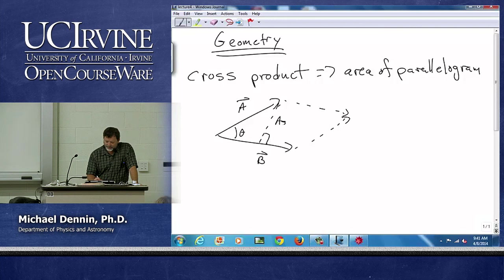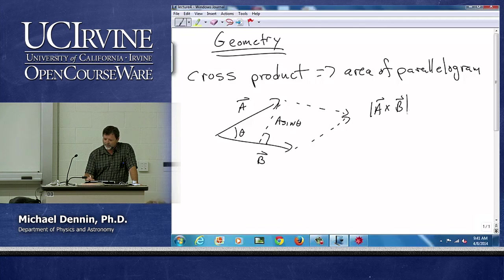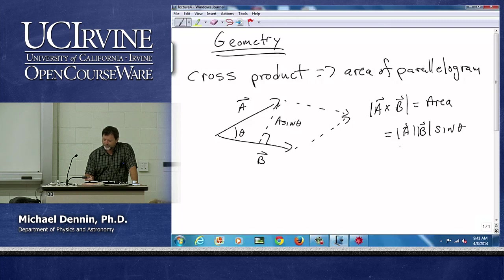To get the area, we would take a sine theta times b, which is the magnitude of the cross product. So it's the area of the parallelogram, and it's the magnitude of a times the magnitude of b times the angle between them. Notice a completely geometric construction.